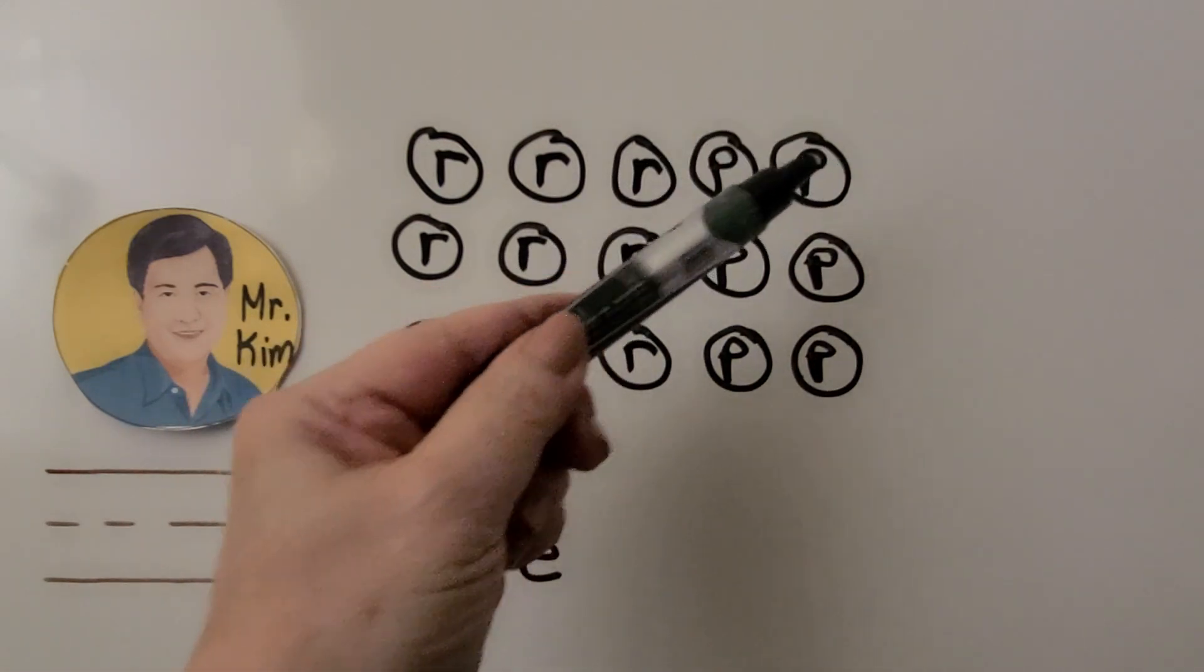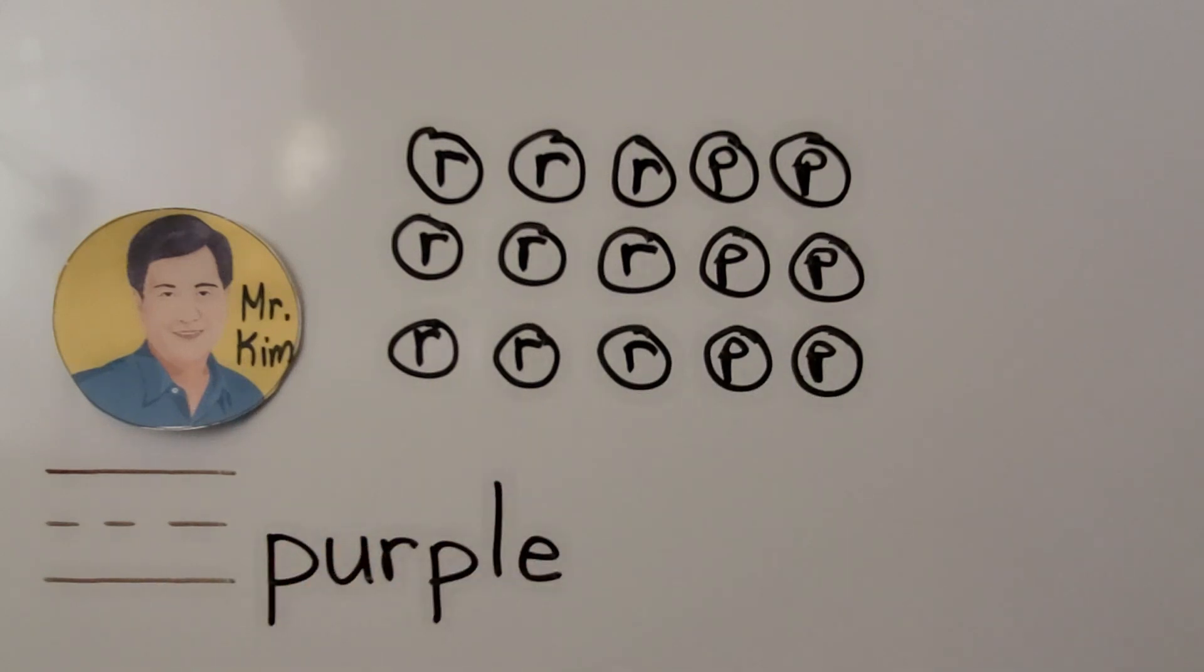Counting 1, 2, 3, 4, 5, 6. There are 6 purple in his garden. We can write the number 6. There are 6 purple flowers.